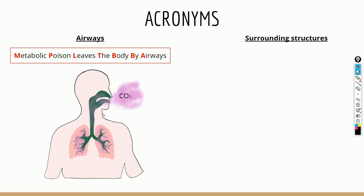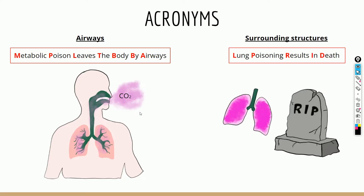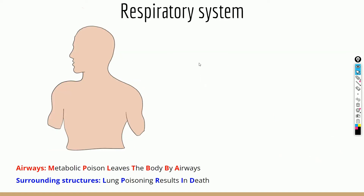For the airways, the acronym we'll use is 'Metabolic Poison Leaves The Body By Airways,' which makes sense because carbon dioxide is a metabolic poison that leaves the body by airways. For the surrounding structures, continuing the poison theme, the acronym is 'Lung Poisoning Results In Death.' Try to remember these two sentences and they'll help you organize your thoughts.